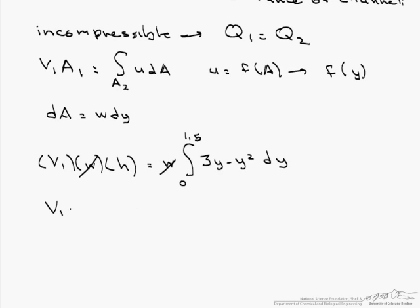We have v1 times h equals 3/2 y squared minus 1/3 y cubed, evaluated from 0 to 1.5, and that equals 2.25 feet squared per second.